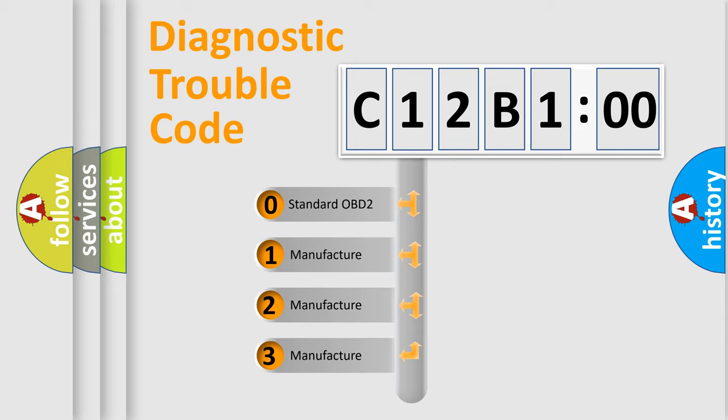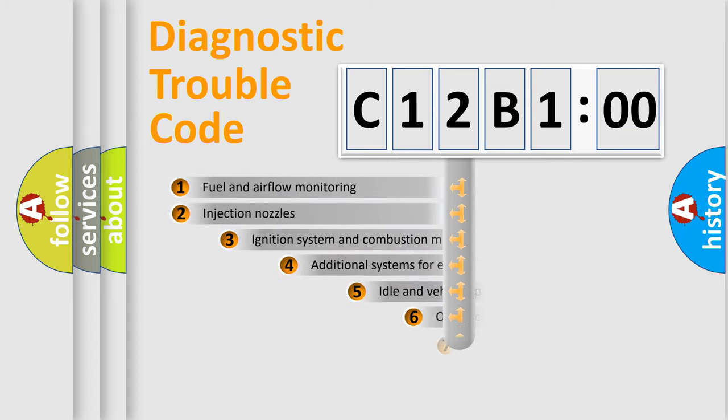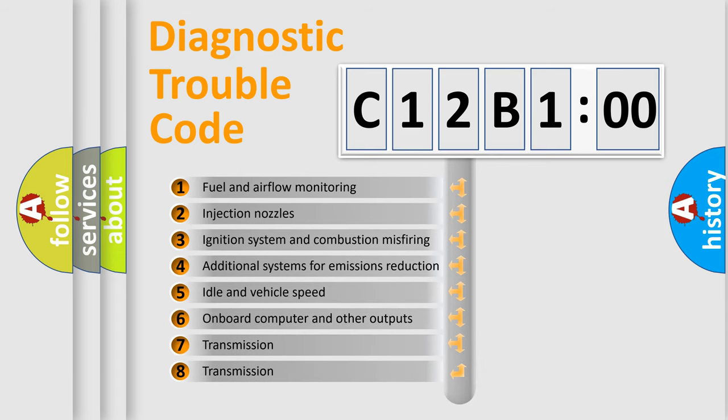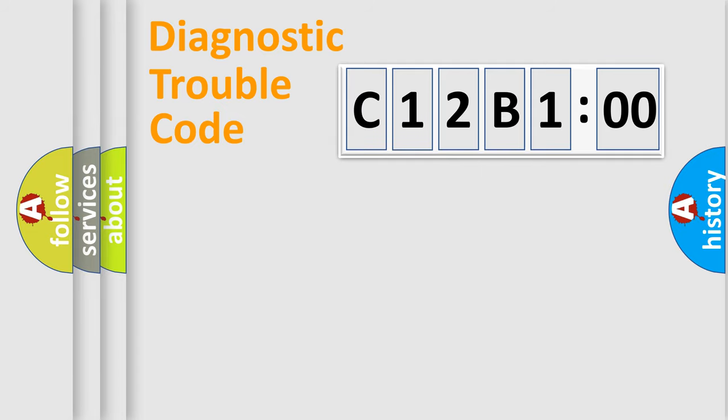If the second character is expressed as zero, it is a standardized error. In the case of numbers 1, 2, 3, it is a more precise expression of the car-specific error. The third character specifies a subset of errors. The distribution shown is valid only for the standardized DTC code. Only the last two characters define the specific fault of the group.